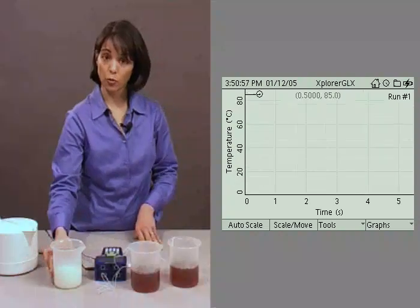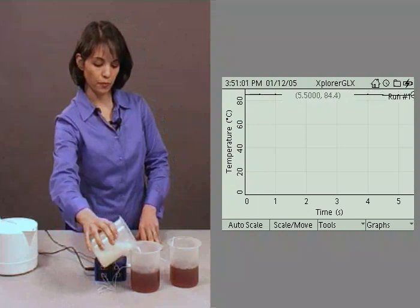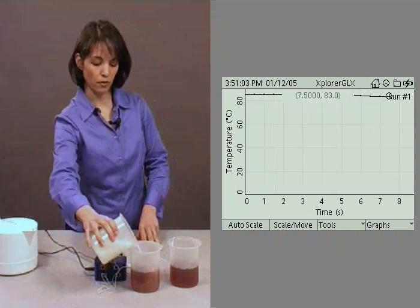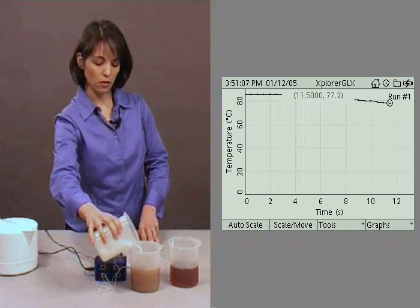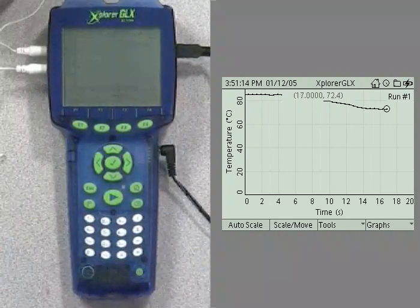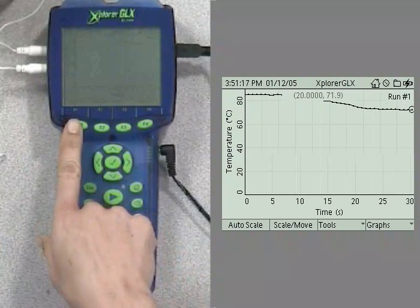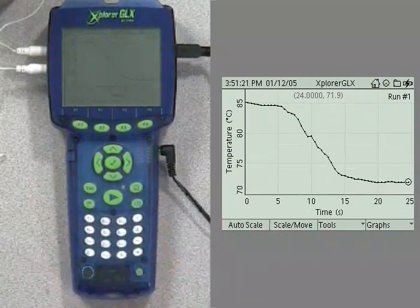And then we'll go ahead and start collecting data by pushing the start button in the middle of the GLX. And let's add our cream to our first container, about 100 milliliters. And immediately, you see the temperature start to decrease. It's kind of hard to see, so let's push the autoscope button, F1, to have all that data fit on the graph correctly.